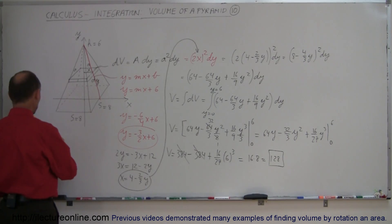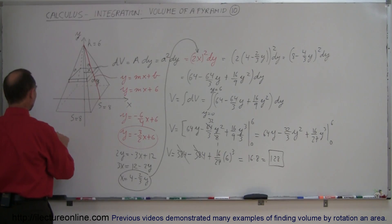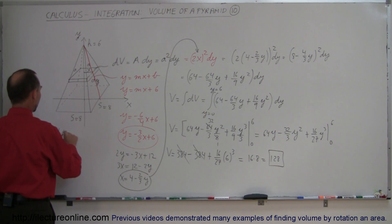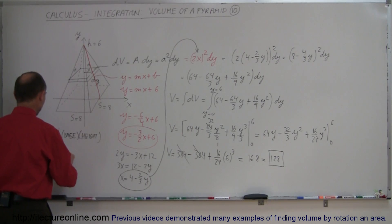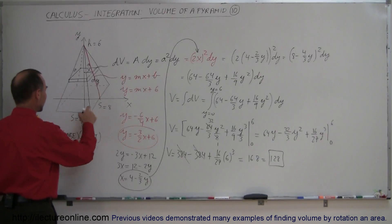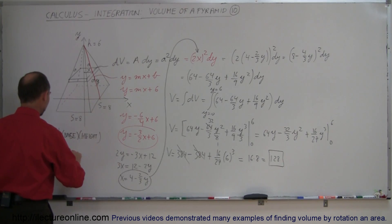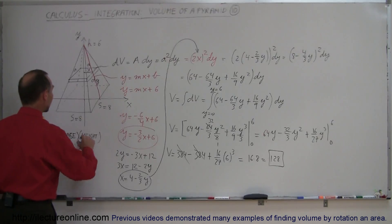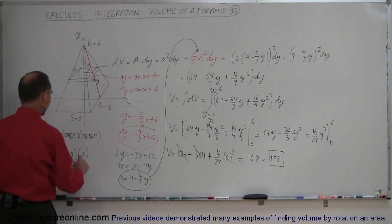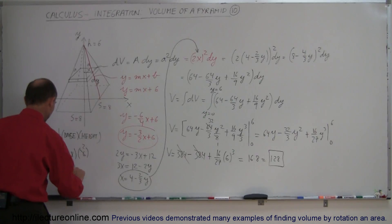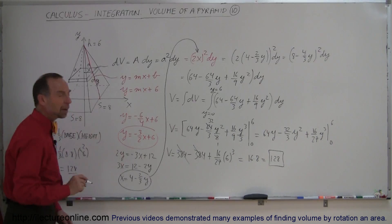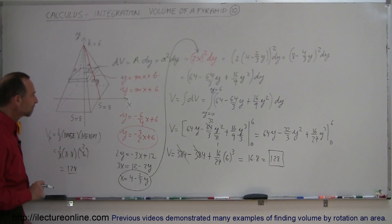Let's check this with the known formula: the volume of a pyramid equals one-third times the base area times the height. The base would be 8 by 8, so 8 times 8 is 64, and the height is 6. One-third times 64 times 6: 6 divided by 3 is 2, times 64 is 128. Yes, that gives us the same answer of 128, so we know we did it correctly.